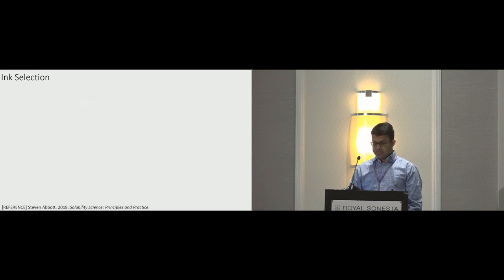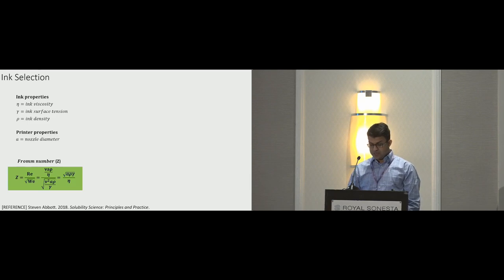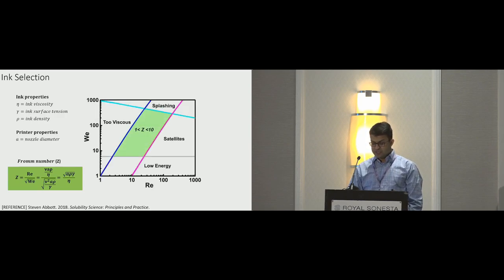The main idea is to predict the inkjet printability based on three ink properties, which are commonly available in the data sheet of the inks and the nozzle diameter of the printer. The printability is then expressed by a number Z. Here is the equation to calculate it based on four known values. I'm not going to bore you with the details of this equation. What's more important is how to interpret the result. For printability, Z should be in the range from 1 to 10 as highlighted in this graph. Values outside this range are not printable.